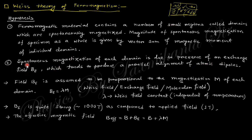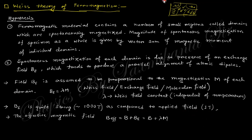The exchange field of one domain wants to align the dipoles of a neighbouring domain along the same direction. There is an interaction between the domains, and the exchange field B_e is assumed to be proportional to the magnetization M of each domain — because if the magnetization of a domain is high, the exchange magnetic field is also high. So B_e equals lambda times M. This exchange field is very strong: around 1000 tesla, compared to a typical applied field of 1 tesla.